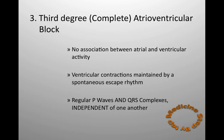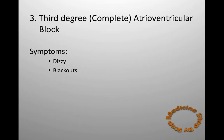Finally, there is third degree complete heart block. There is no association between the atria and the ventricles. The ventricular contractions are maintained by a spontaneous escape rhythm, usually at around 40 beats per minute, by an automatic centre below the site of the block. There are regular P waves and also regular QRS complexes, where they are completely independent of one another. The symptoms can be dizziness and blackouts, and if the ventricular rate is very slow, heart failure may occur. Insertion of a permanent pacemaker will be required.